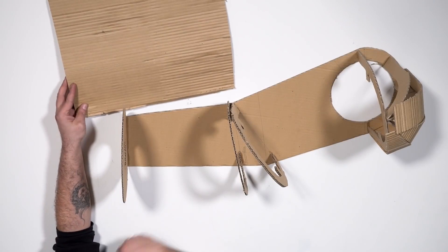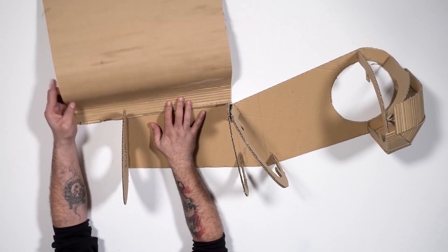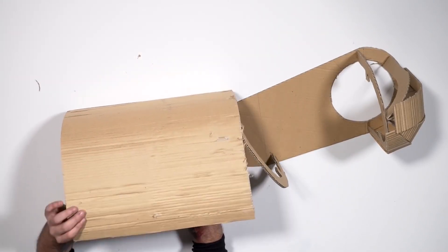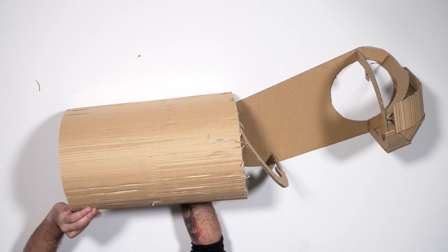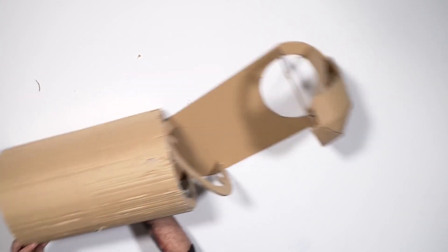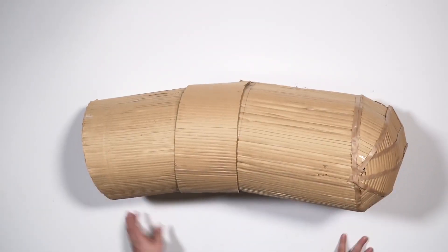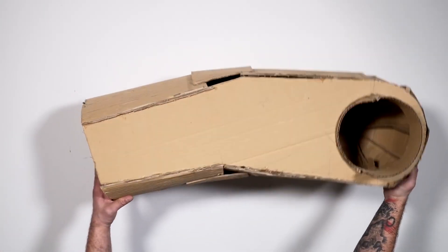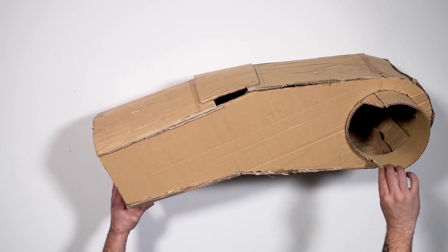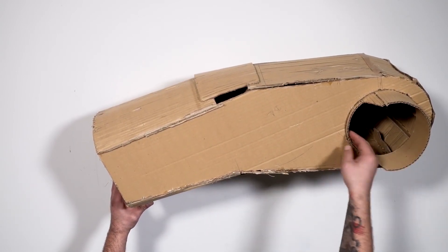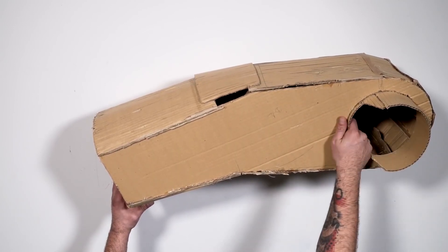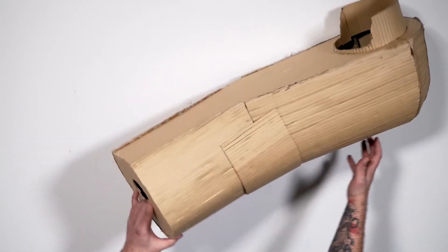To finish off the arm, make all the triceps, biceps and forearms out of cardboard. And with this, we will have a bigger arm than Thor. And inside the hole we made earlier, you need to add an extra piece of cardboard, which will help to join the arm to the rest of the costume. We are doing very well my friends, we are halfway through.